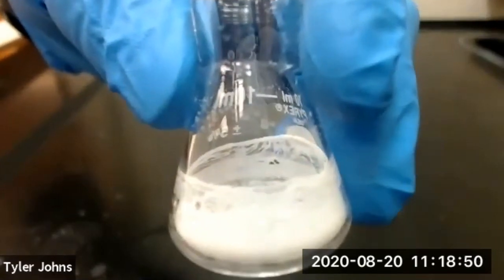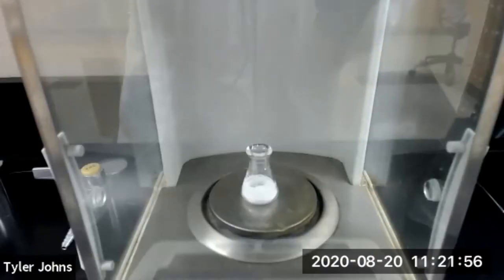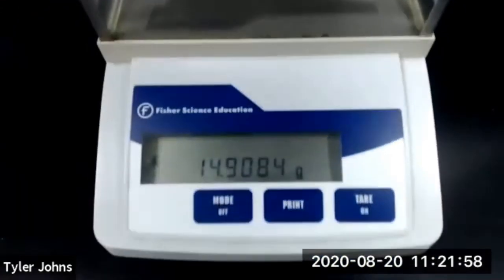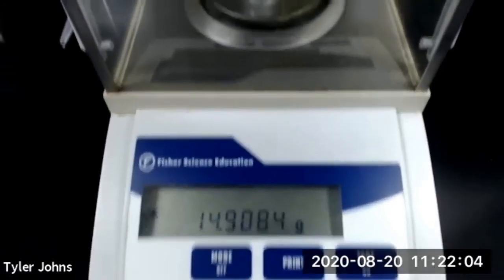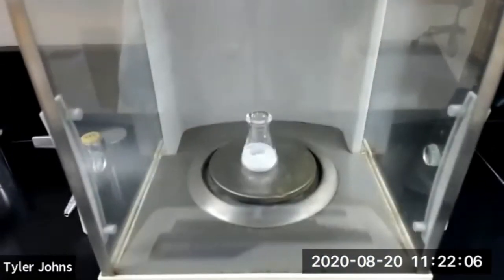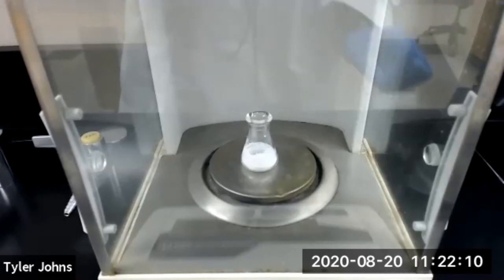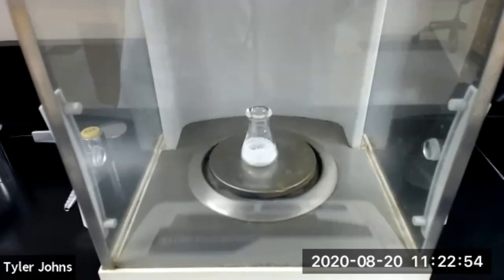The mass of our 10 milliliter Erlenmeyer flask and the caffeine is 14.9084 grams. You can now determine the amount of caffeine that was in the methylene chloride. This concludes part A of this experiment.